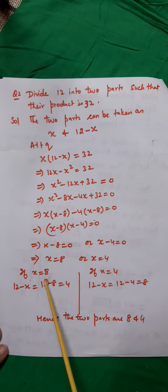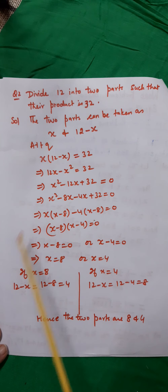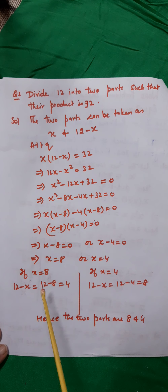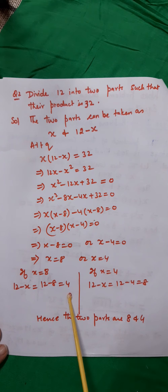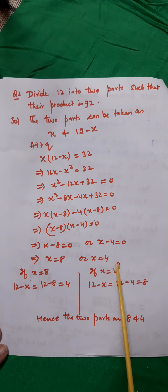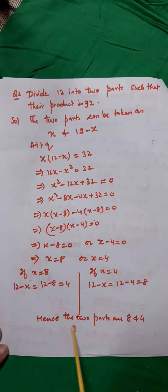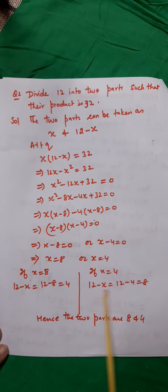If x = 8, then 12 − x = 12 − 8 = 4. If x = 4, then 12 − x = 12 − 4 = 8. Hence the two parts are 8 and 4.